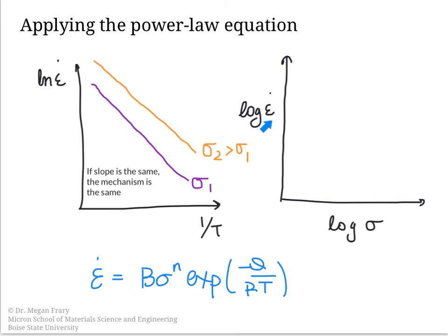Looking at strain rate versus stress on a log-log plot: taking the log of both sides gives a linear relationship where the slope equals N, the stress exponent. At a given temperature T2, the slope is N. Going to a higher temperature shifts the line upward, since a higher temperature gives a higher strain rate. Again, if the slopes are the same, the same mechanism is active. These relationships are confirmed by experimental data.